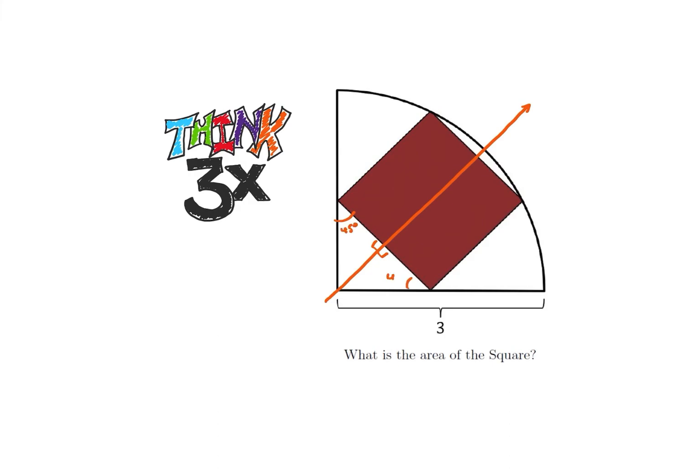So each of these two angles right here is going to be 45 degrees. And for the rest of this problem, what I'm going to do is I'm going to label this side of my square as the side B. So all four sides of my square are the same length B.